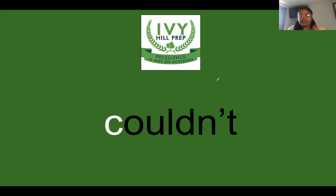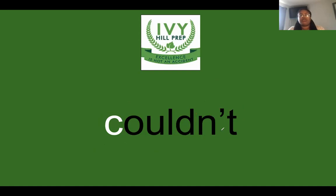Come closer to the screen. Whenever you see an apostrophe T, this is an apostrophe — everyone say 'apostrophe.' Say it, go! Good. An apostrophe substitutes letters that are supposed to be there. The letter that the apostrophe replaces here is the letter O.